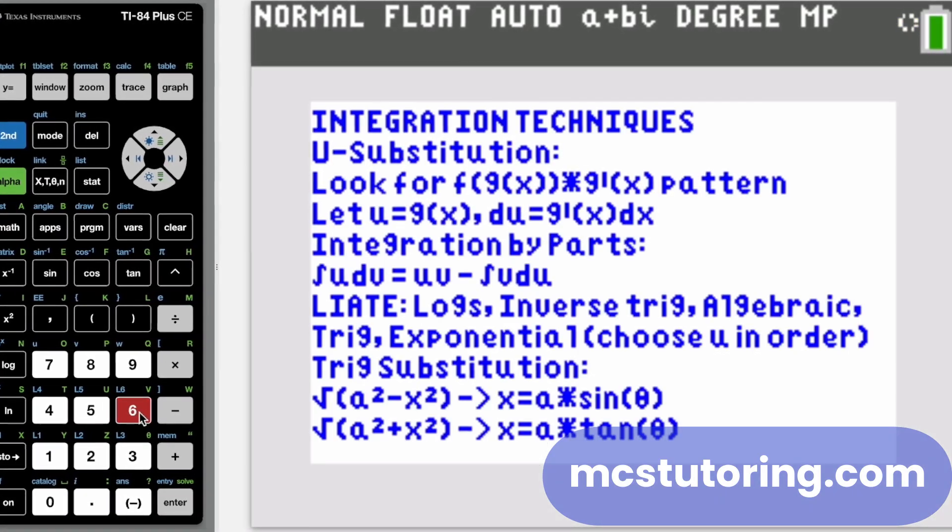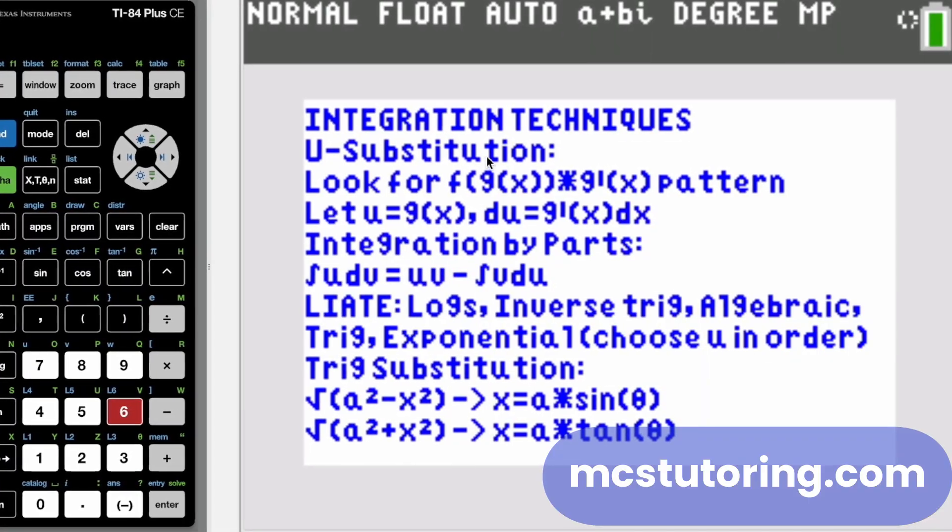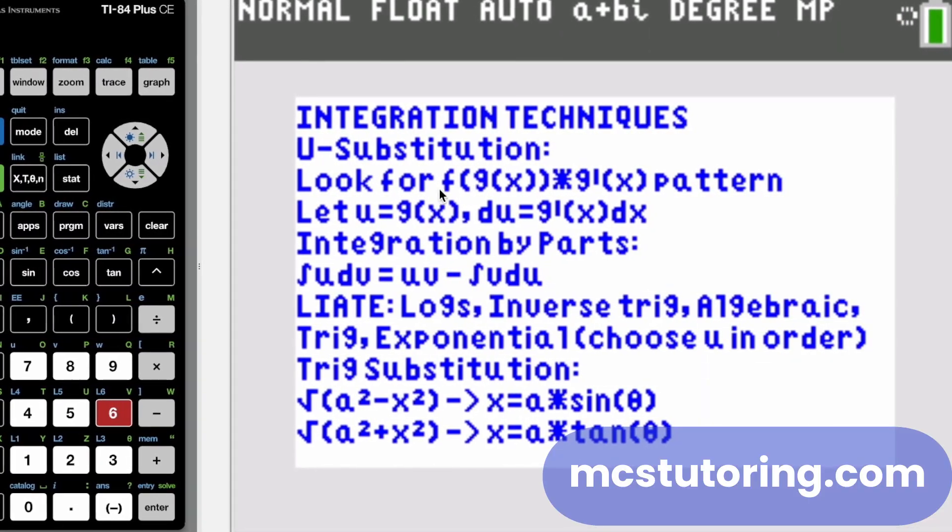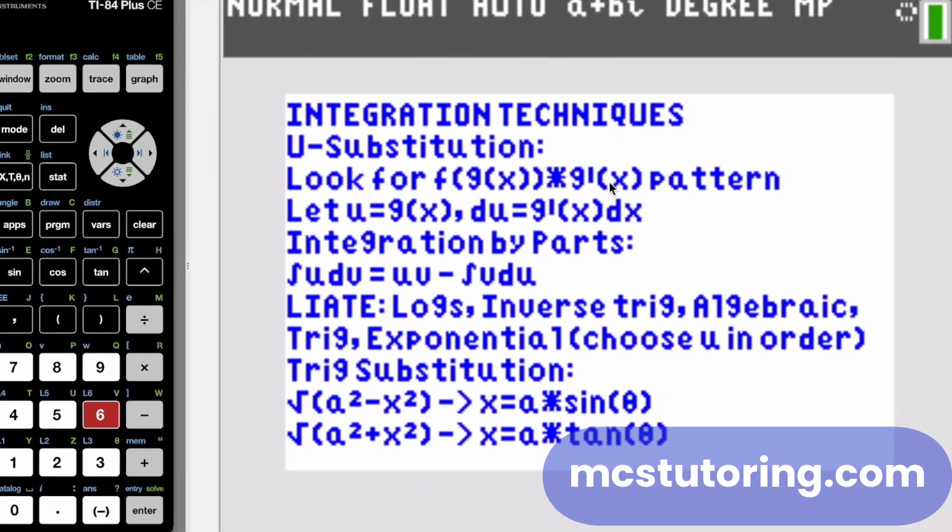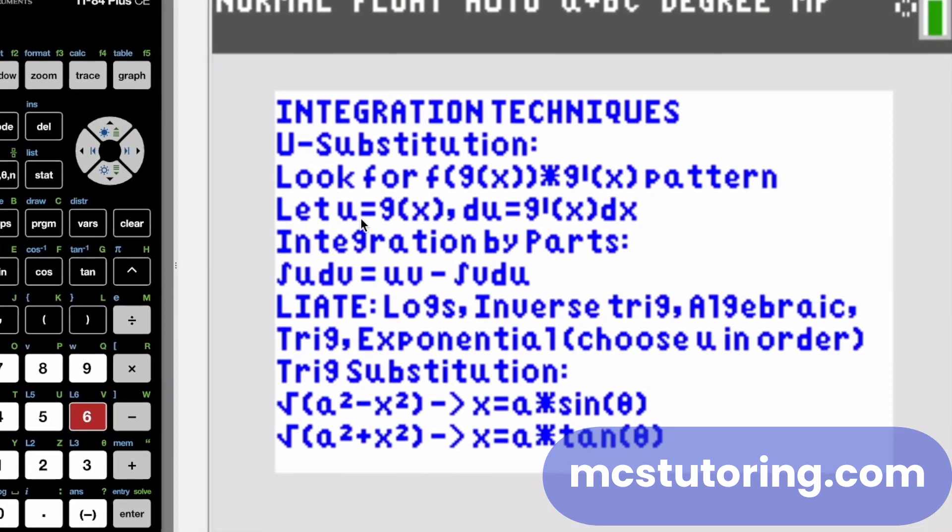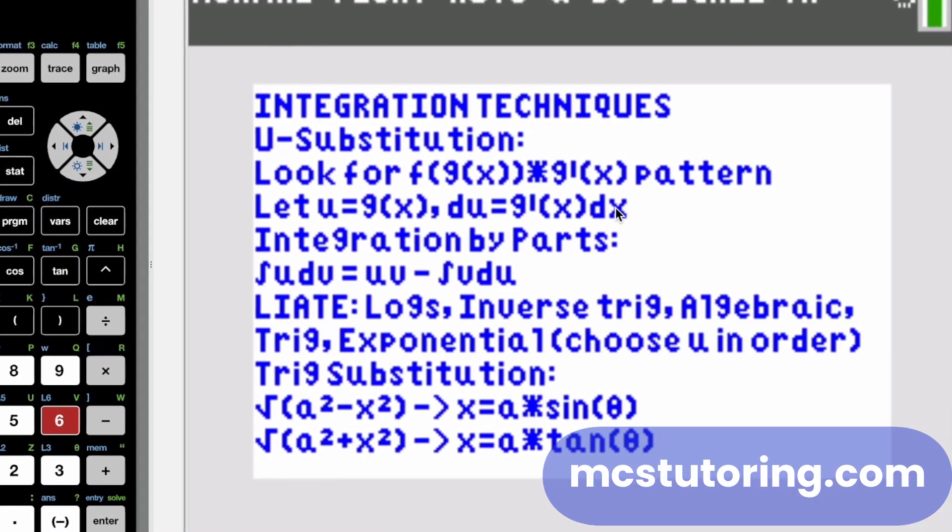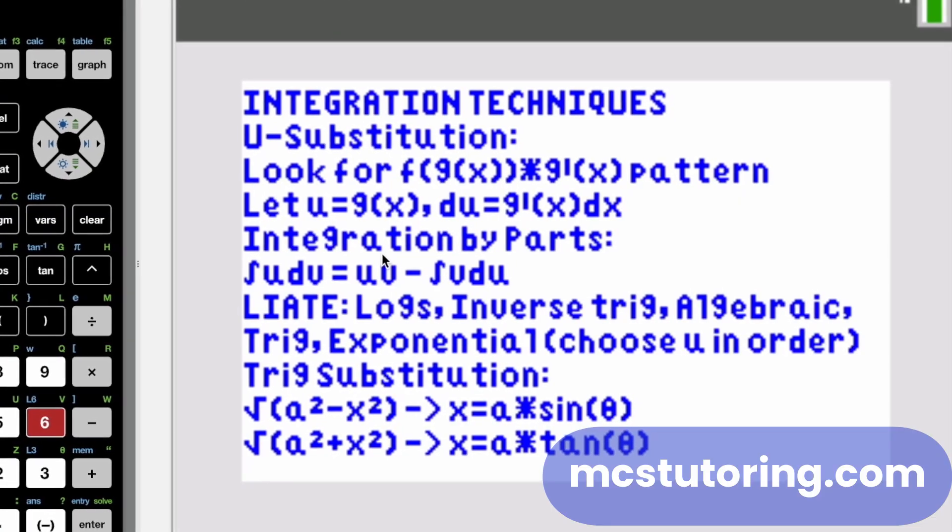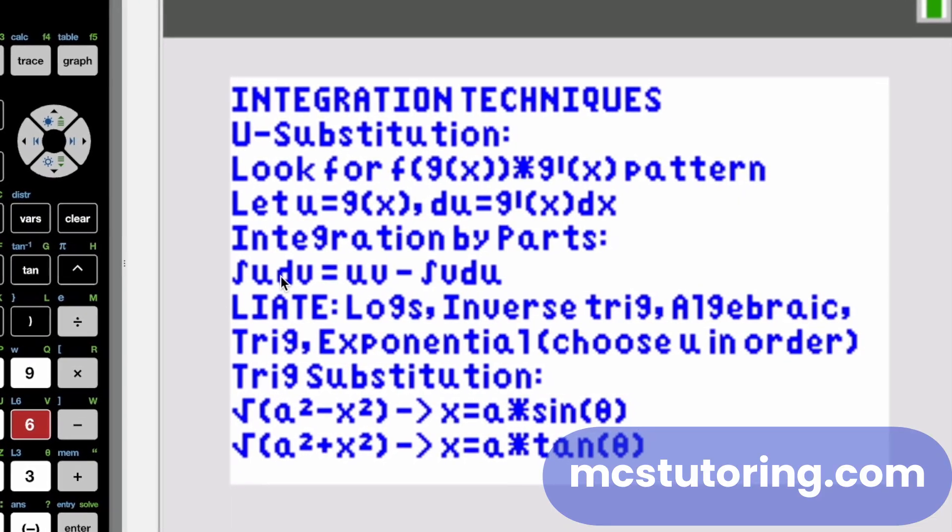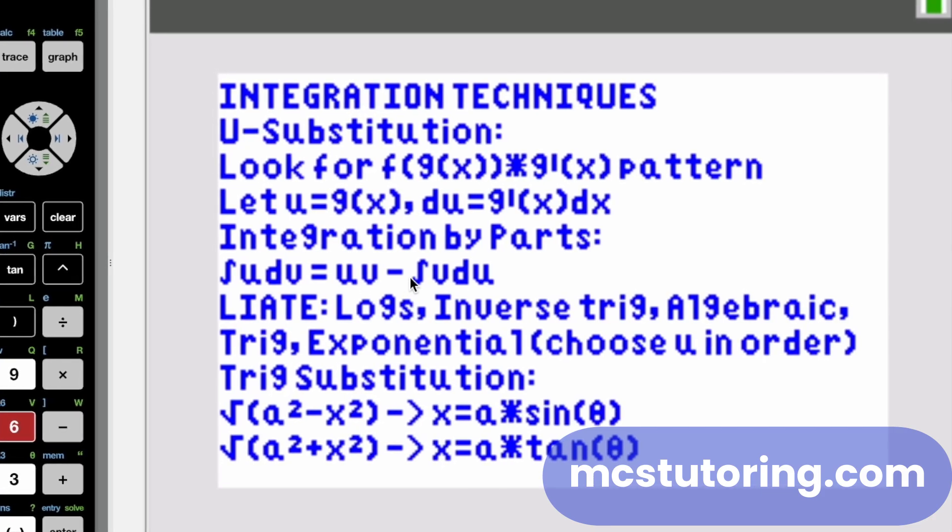Now integration techniques. Now I've got U substitution. So when we have F of G of X times G prime of X pattern, you let U equal G of X, D U equal G prime of X, D X. You got integration by parts also.